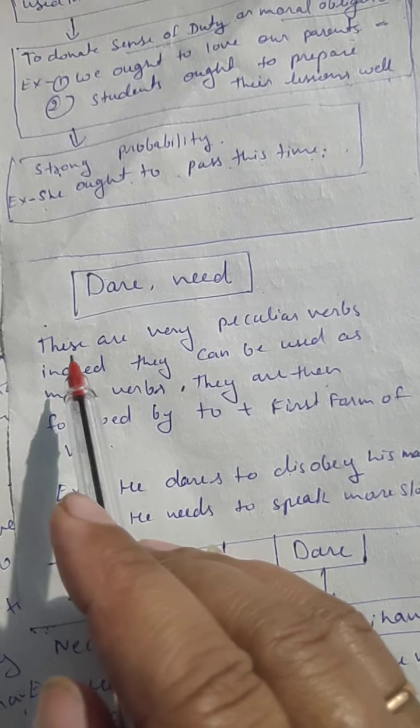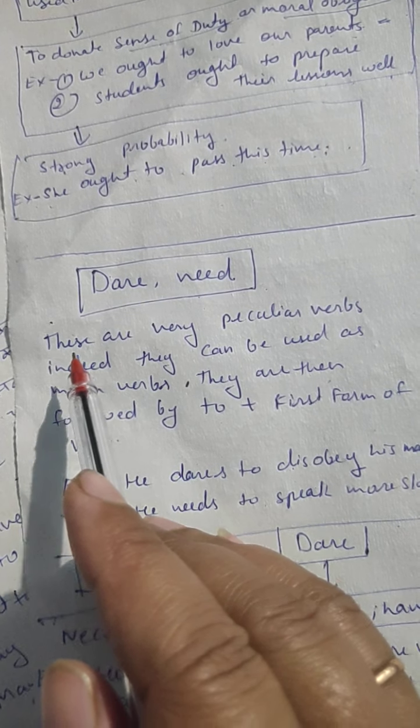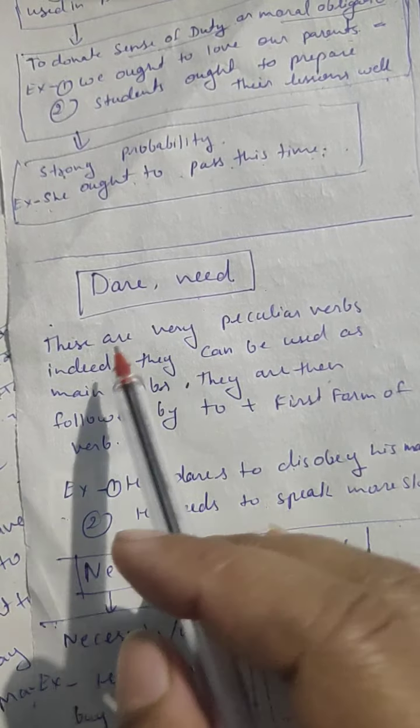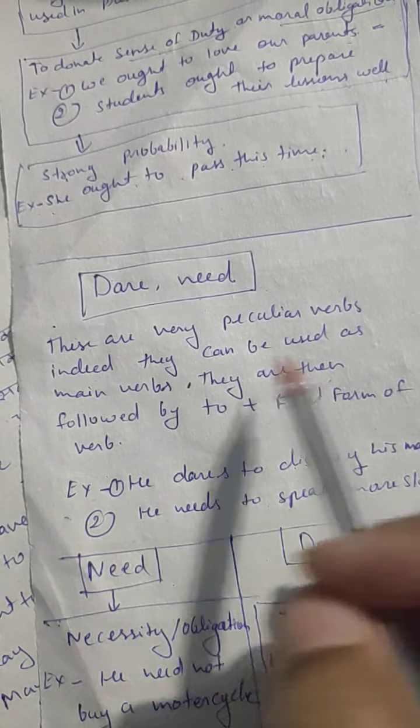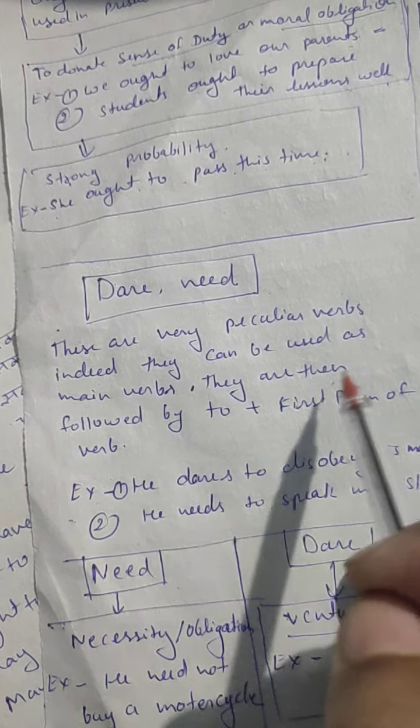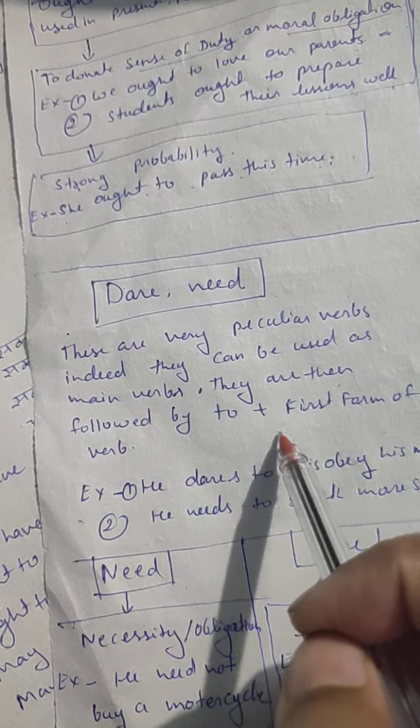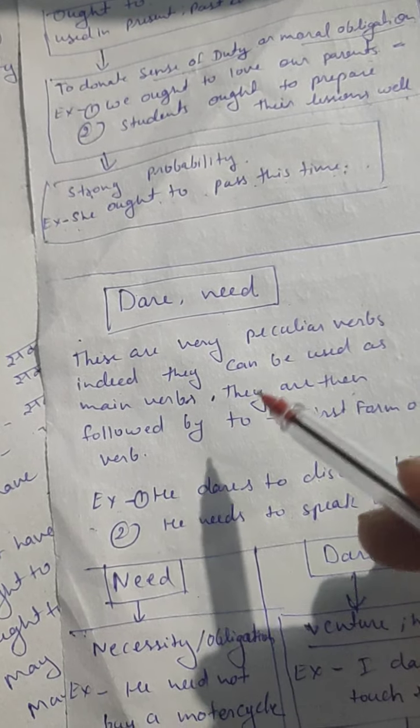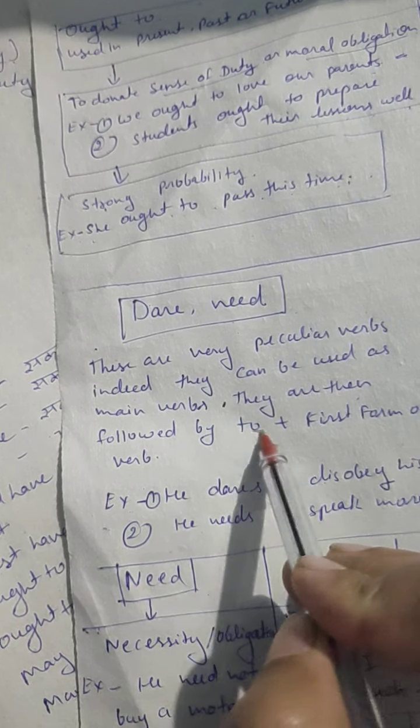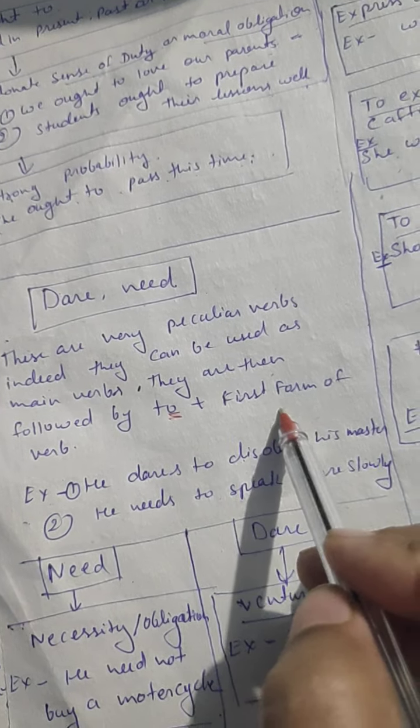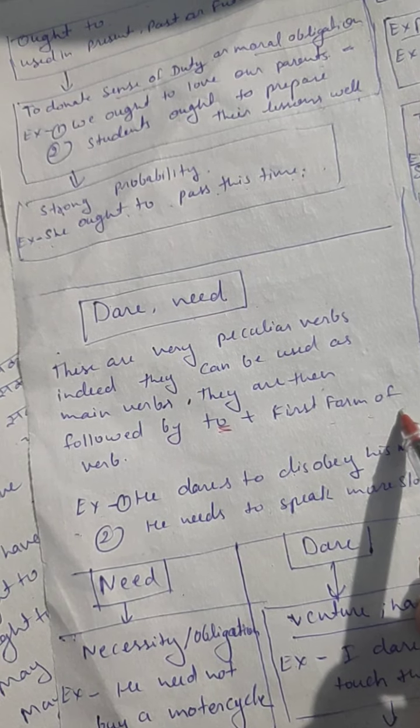I have already written here. These are very peculiar verbs. Indeed, they can be used as main verbs. They are then followed by 'to'. If we use them as main verb, they are always followed by 'to' plus verb's first form.